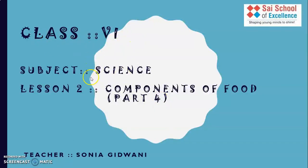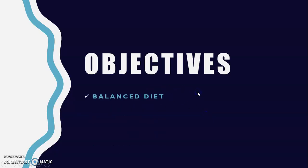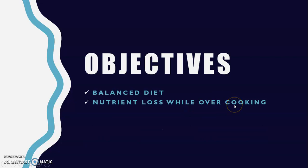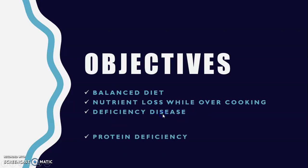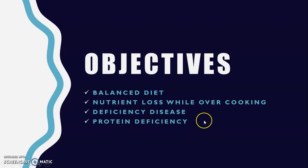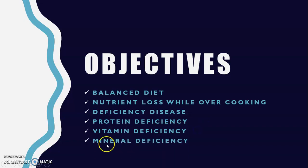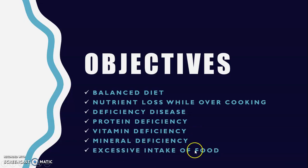Good morning Class 6 students. I am your science teacher and this is Part 4 of the video for components of food. Today we are going to study about balanced diet, nutrients lost while overcooking food, deficiency diseases like protein deficiency, vitamin deficiency, mineral deficiency, and what happens due to excessive intake of food.